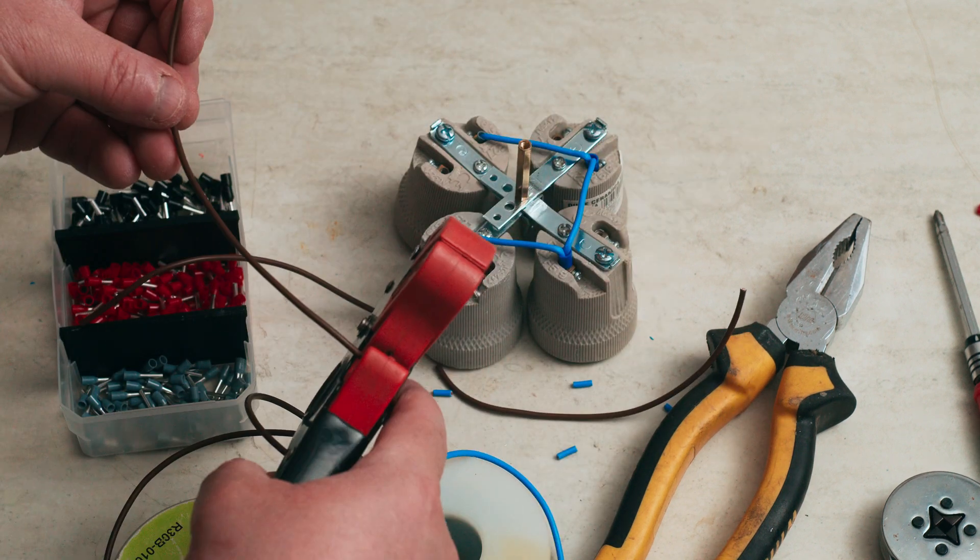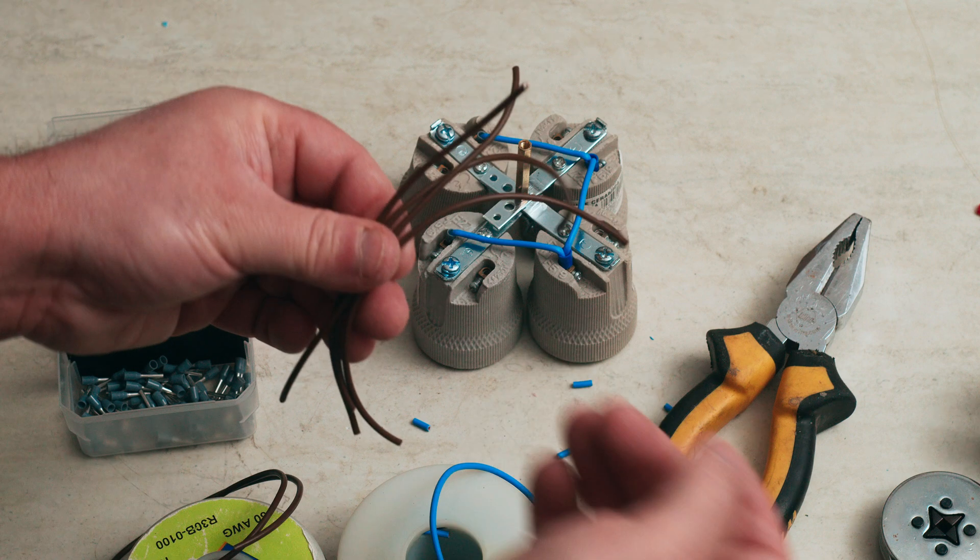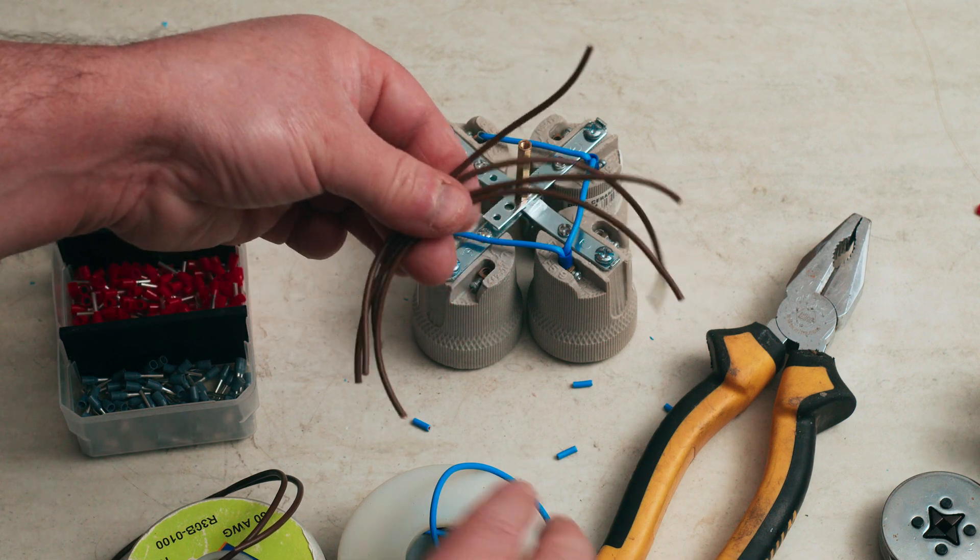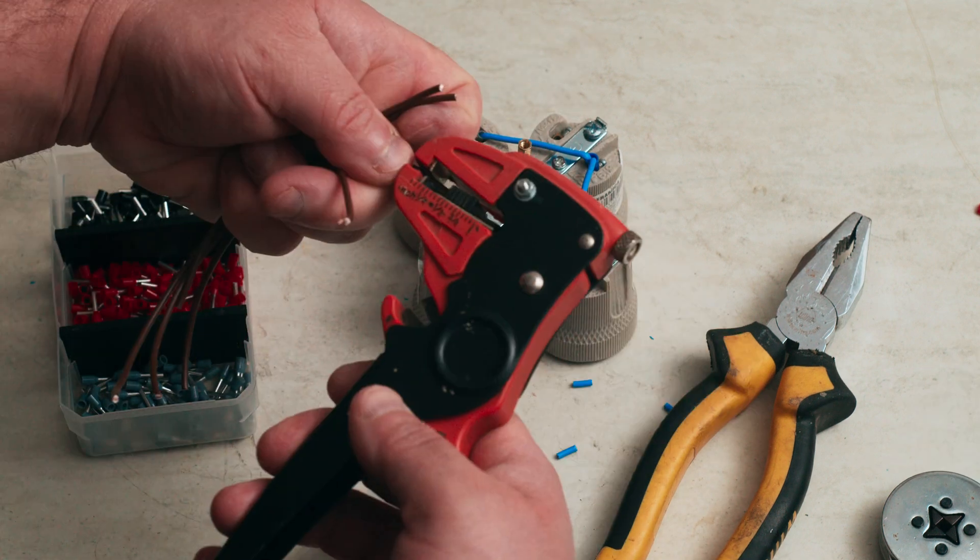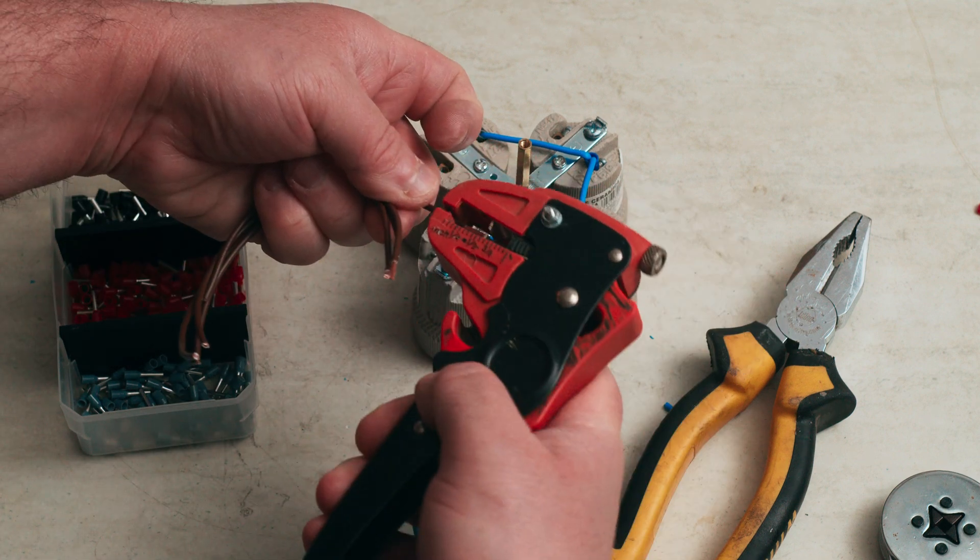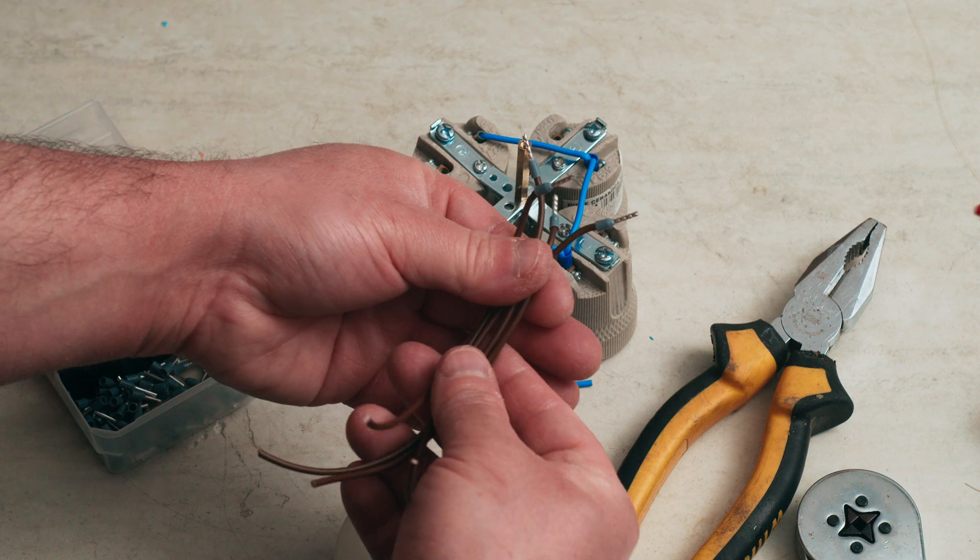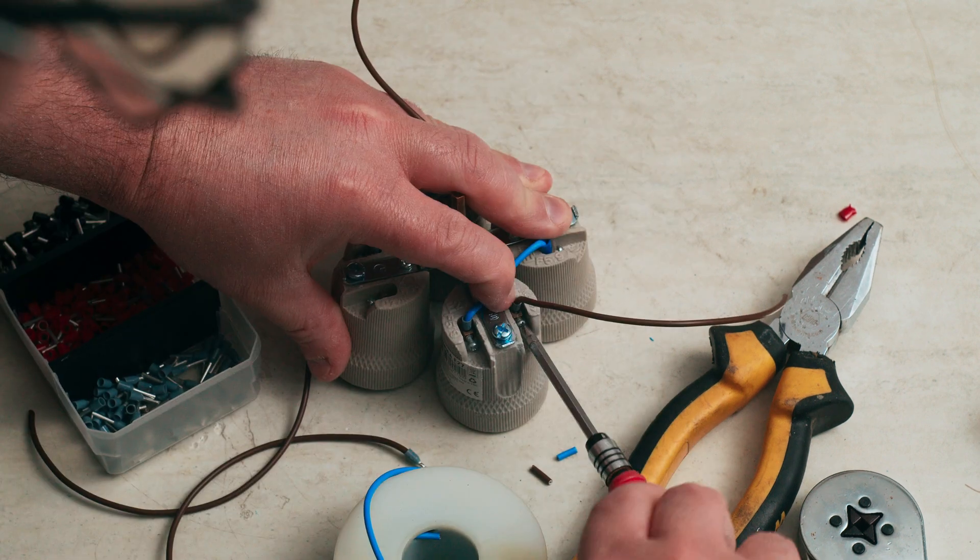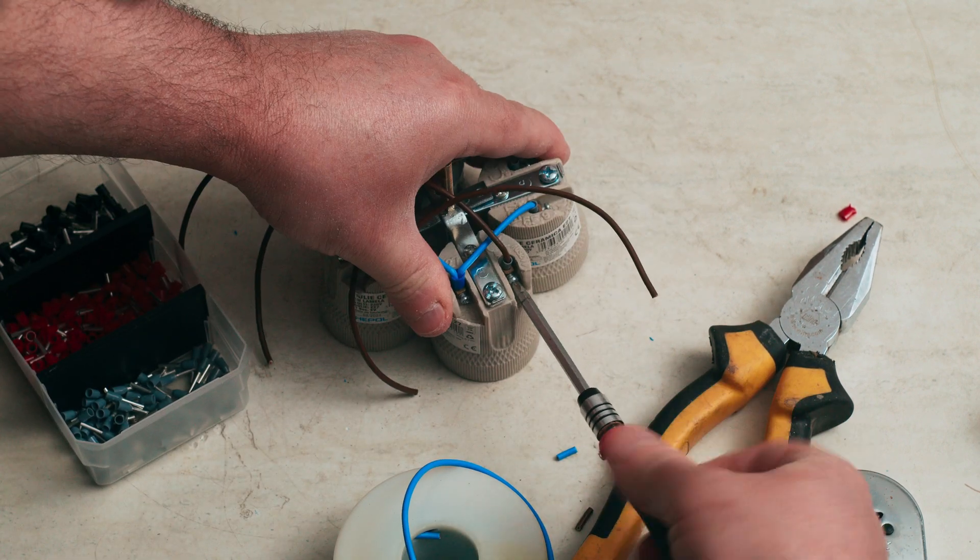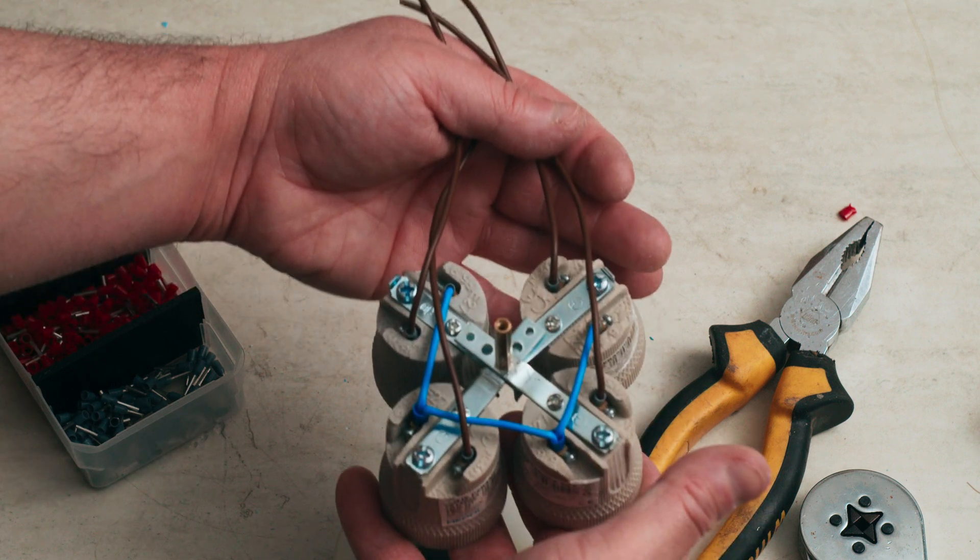Now the live wires. These will go from the sockets to the switches. Better cut them longer for now and trim them later as needed. Attach ferrules to the ends that go into the sockets. And the assembly is done.